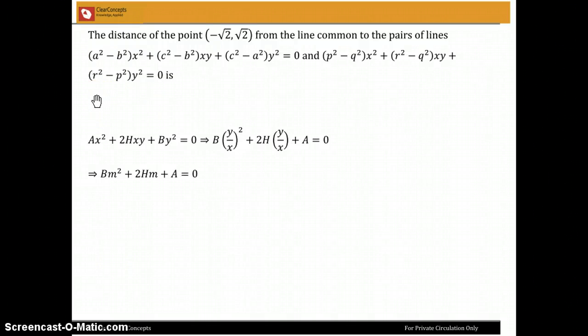Karthikeya, you had asked a doubt about this. The distance of the point minus root 2 comma root 2 from the line common to the pairs, the two pairs of lines here, is.